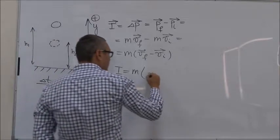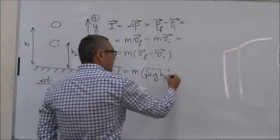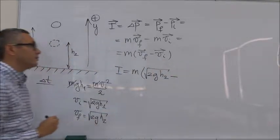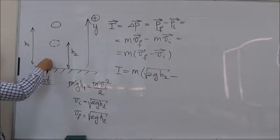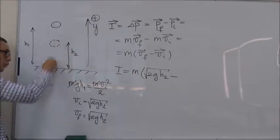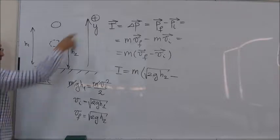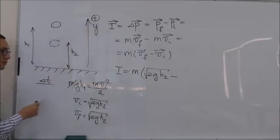So this is square root of 2GH2 minus the initial. The initial is just before the collision and just before the collision, the ball is moving downwards. So its velocity is negative. It's opposite to this chosen positive direction.